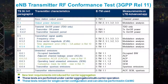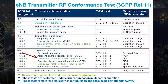The most extensive changes were introduced in Release 11, where new RF requirements were added for non-contiguous carrier aggregation to take into account additional emissions within the sub-block gap, called cumulative ACLR and cumulative spectrum emission mask.